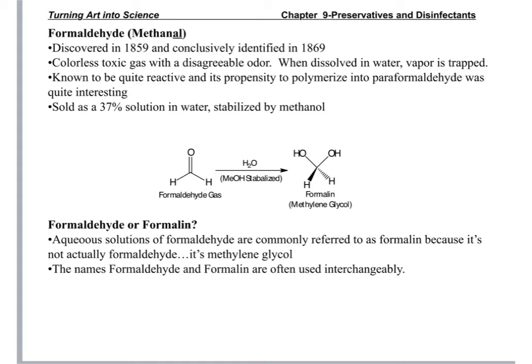Formaldehyde was discovered in 1859 but not identified as such until 1869. It is a colorless, toxic gas with a disagreeable odor — you can't see it, but you can definitely smell it. When dissolved in water with the vapor trapped, it is sold as a 37% aqueous solution. In aqueous solution it is commonly referred to as formalin, and is technically methylene glycol. The names formaldehyde and formalin are often used interchangeably.